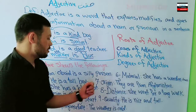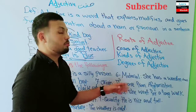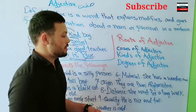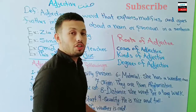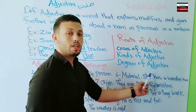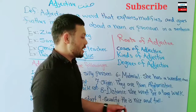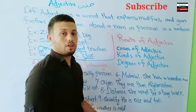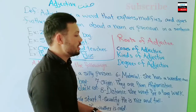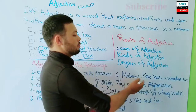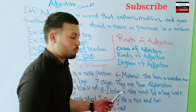Number six: adjectives can show material — 'madah' in Dari. For example: 'She has a wooden chair.' Here 'wooden' is the adjective describing what the chair is made of. So 'wooden' refers to the material — wood.